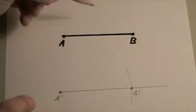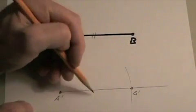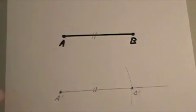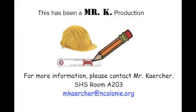And now line segment AB is congruent to line segment A prime B prime.